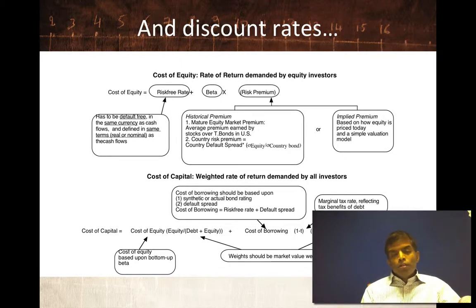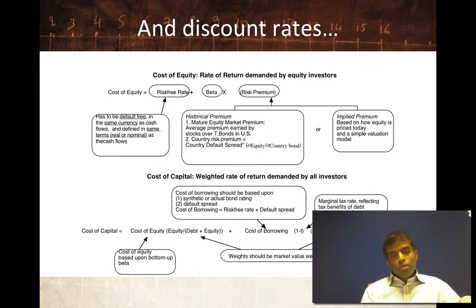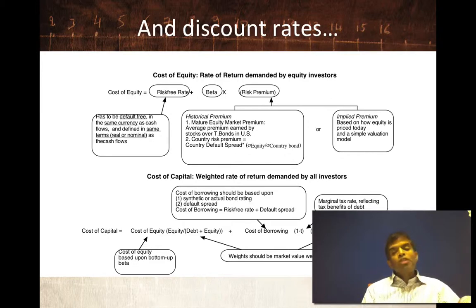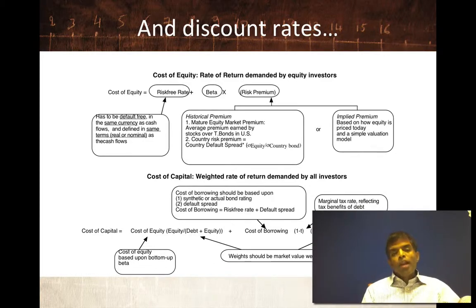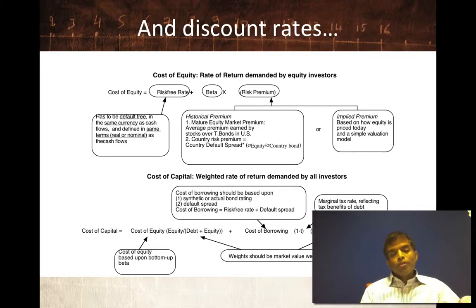The risk-free rate — the starting point for your discount rate — must be in that chosen currency. For something to be risk-free, there can be no default risk and you must know your expected returns with certainty. In U.S. dollars, people have historically used the U.S. Treasury bond rate — the 10-year or 30-year rate — implicitly assuming no default risk. For Mexican pesos, the government bond rate might not be risk-free if you think there's default risk in the Mexican government, so you'd need to clean up that rate to get a true risk-free rate.